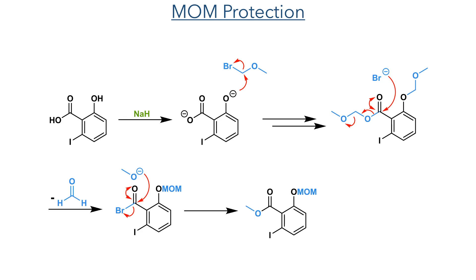To synthesise Fragment 2, they started with a hydroxyiodobenzoic acid compound. This underwent a one-pot MOM protection esterification reaction. The molecule is first deprotonated with sodium hydride, and the resulting phenolate and carboxylate attack MOM bromide, installing the MOM groups. The MOM ester is highly activated as an electrophile and is then attacked by bromide, forming an activated acyl bromide upon elimination of formaldehyde and methoxide. The methoxide then acts as a nucleophile to displace the bromide and form the methyl ester.